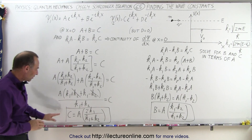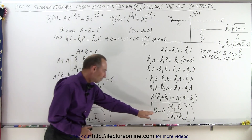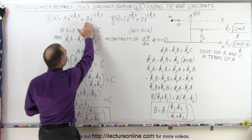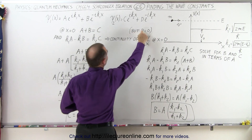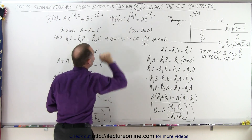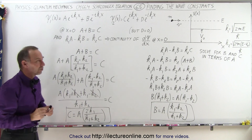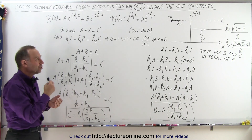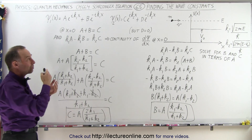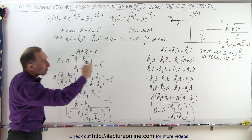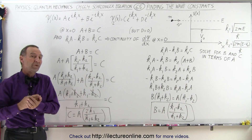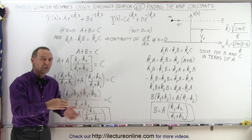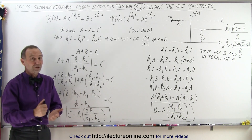Now that we've found b in terms of a and c in terms of a, we can replace the constants b and c in the wave function equations. Since d equals zero, both wave functions are expressed in terms of only one constant, a. This will allow us to find T and R — where T represents the percentage of particles transmitted and R the percentage reflected. That will be covered in future videos, so stay tuned.